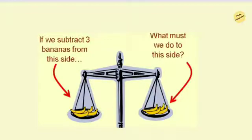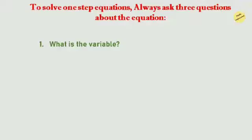Equations are like a balance scale where it shows that two quantities are equal. What you do to one side of the equation must also be done to the other side to keep it balanced. For example, if we are removing three bananas from the left side, we need to remove three bananas from the right side also — only then it will be balanced.